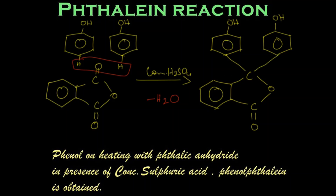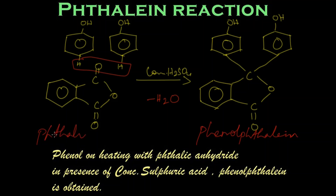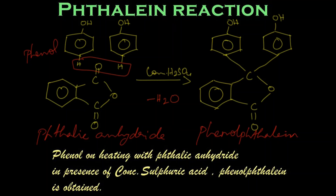This product is known as phenolphthalein. Phenolphthalein is the product, and this is phthalic anhydride, and this we know is phenol. So, phenol on heating with phthalic anhydride in the presence of concentrated sulfuric acid gives us phenolphthalein. Thank you.